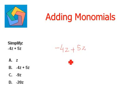Here we have -4z plus 5z. So we know when one number is negative and one number is positive, we subtract. So 5z minus 4z is 1z or simply z, which is option A.